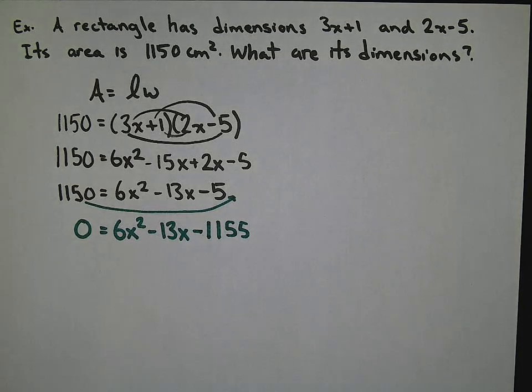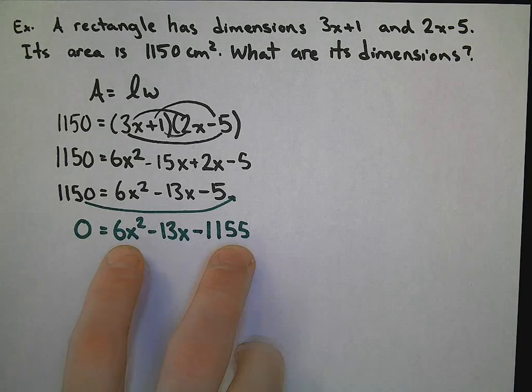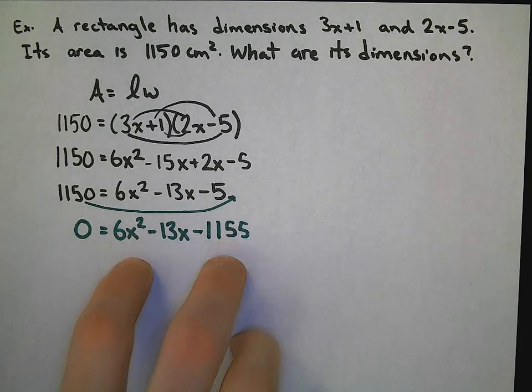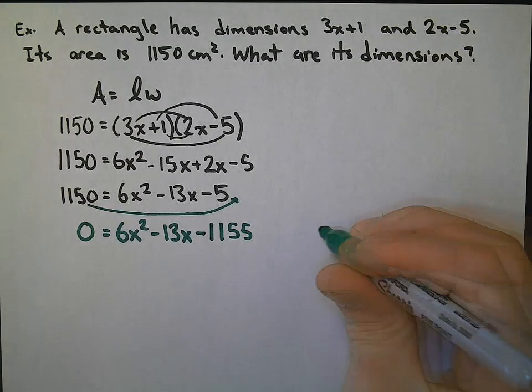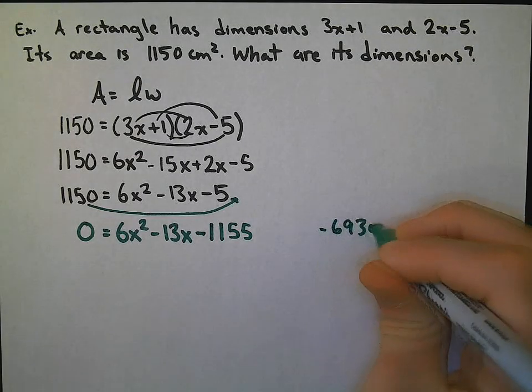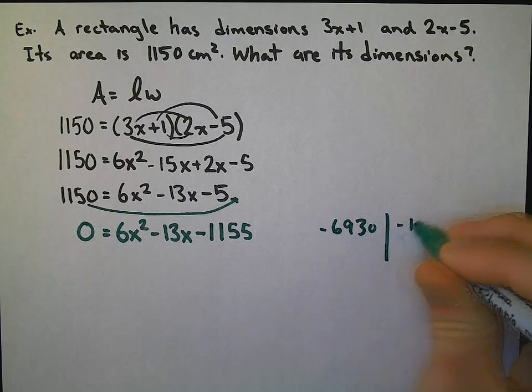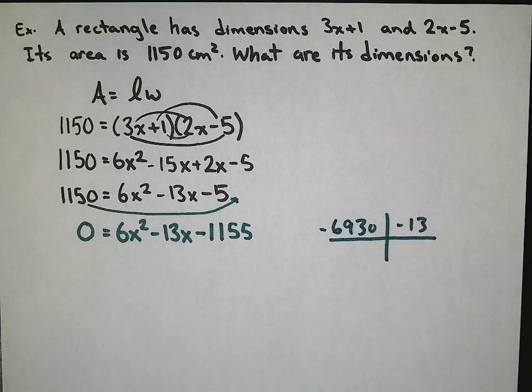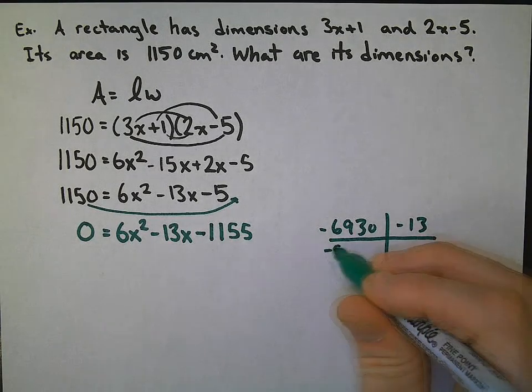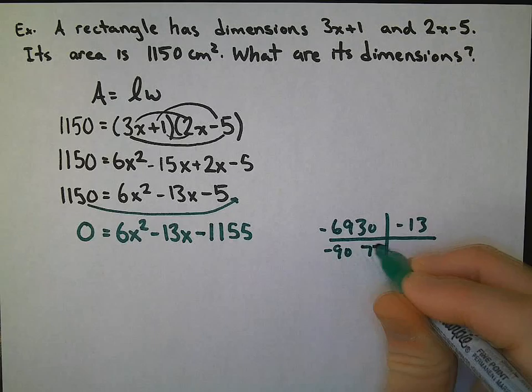This is now a complex trinomial. We are looking for two numbers that multiply to A and C together and add to negative 13. 6 times 1,155 multiplies to negative 6,930 and add to negative 13. That will take quite a bit of time. The answer in this case would be negative 90 and 77.